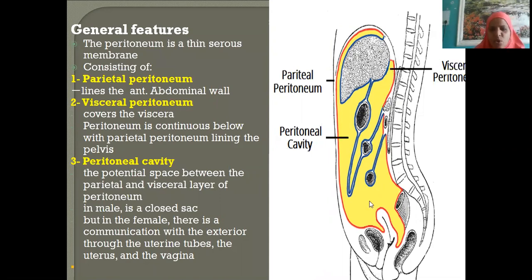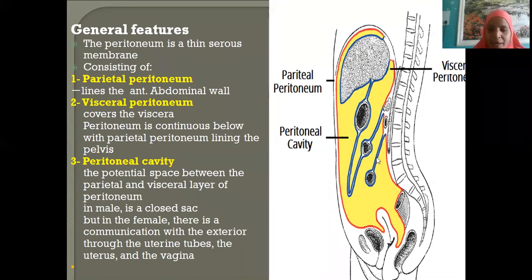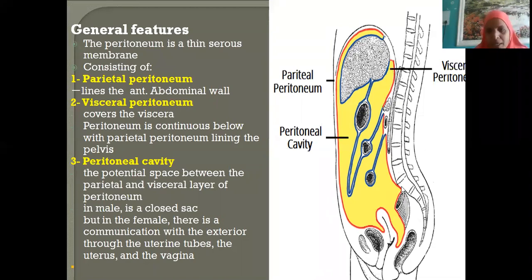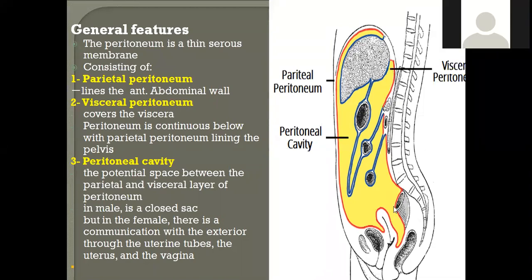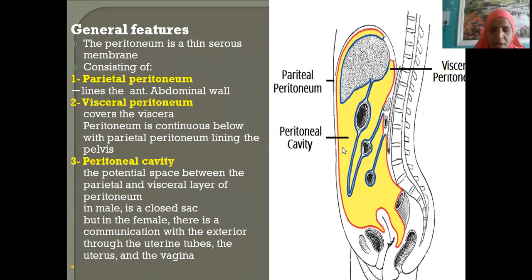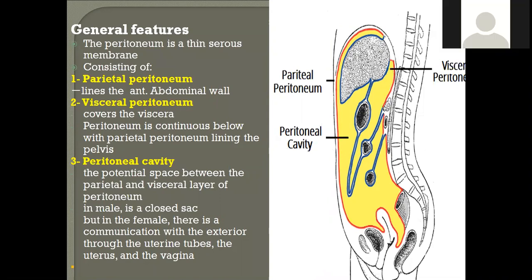The peritoneum continues on the posterior abdominal wall, coming down to cover the coils of small intestine. The fold of peritoneum suspending the small intestine is called the mesentery — 'enteron' means intestine, 'meso' is peritoneum. From the posterior abdominal wall, covering three visceral organs: the parietal peritoneum covers the rectum, the uterus, and the urinary bladder, returning to its point of origin at the umbilicus.